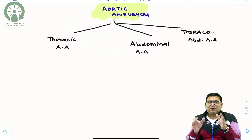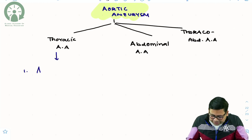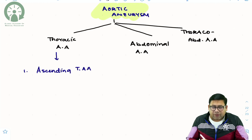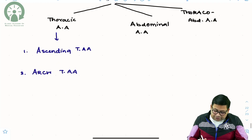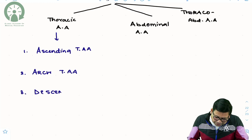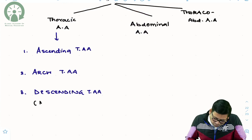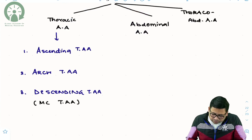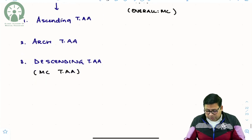Thoracic Aortic Aneurysm is further subdivided: first is the ascending thoracic Aortic Aneurysm, second is the arch thoracic Aortic Aneurysm, and the third is the descending thoracic Aortic Aneurysm. Amongst the thoracic part, the most common thoracic Aortic Aneurysm is the descending type. Overall, the most common Aortic Aneurysm is the abdominal Aortic Aneurysm.